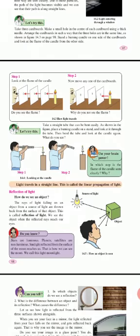For the second activity, take a straight tube that can be bent easily, as shown in the figure. Place a burning candle on a stand and look at the candle through the tube.